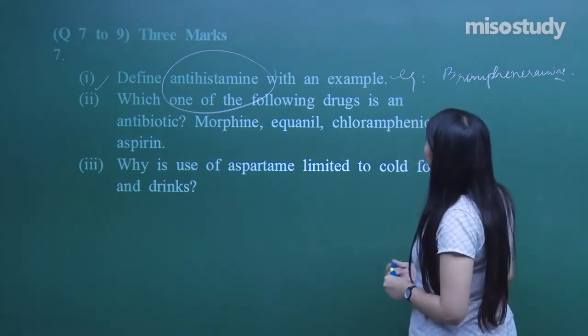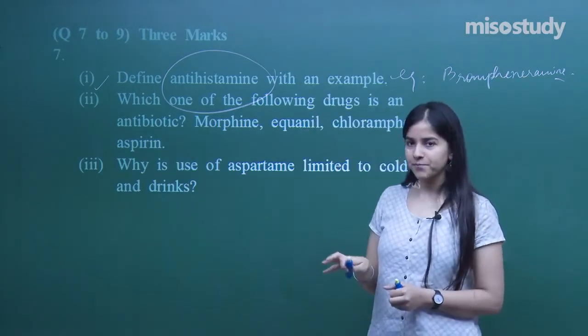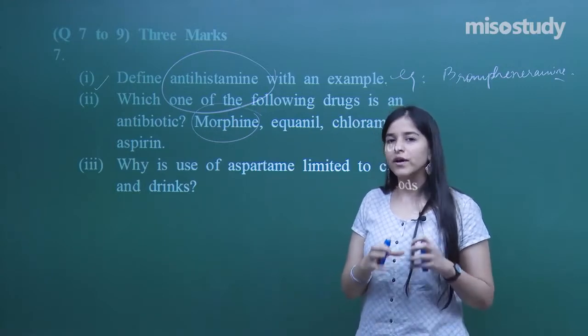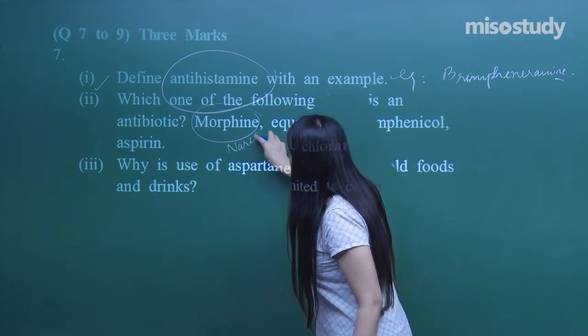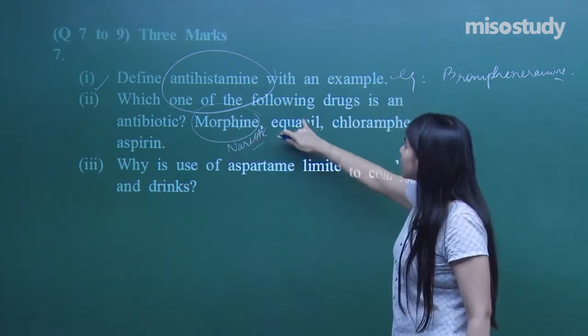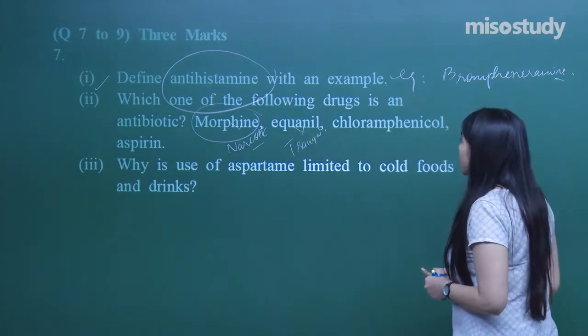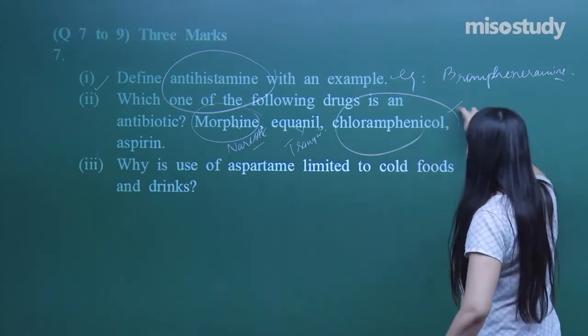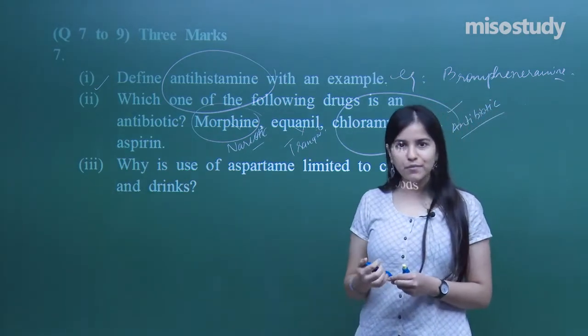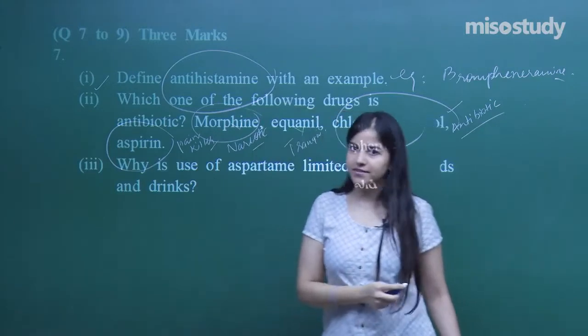Which one of the following drugs is an antibiotic: morphine, equineal, chloramphenicol, and aspirin? Morphine, it's a narcotic analgesic, painkiller, not included in antibiotic. Equineal, it's a tranquilizer. Chloramphenicol, yes, that is the answer, that is the antibiotic. In fact it is a bacteriostatic antibiotic. Aspirin is again a painkiller, non-narcotic analgesic.